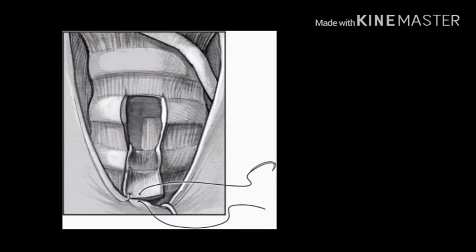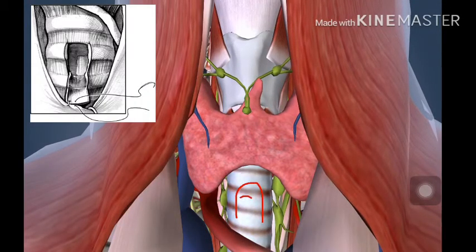After that, you make a Bjork's flap — you reflect a flap from the trachea and suture it onto the skin. This flap forms the platform for placing the tracheostomy tube and makes it easy to change the tube. We call this a safety suture and keep it until we remove the tracheostomy tube and for one or two days afterward, after which the stoma closes by itself.